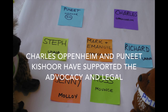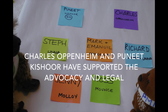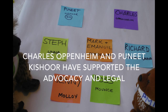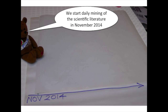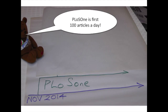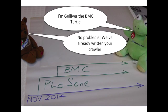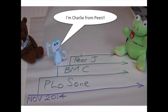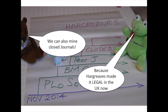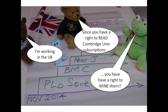We assert that the right to read is the right to mine. We're starting the daily extraction right now — PLOS One, then BMC, then PeerJ, and then moving on to the closed journals, which is now legal in the UK.